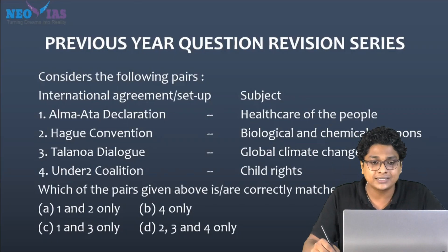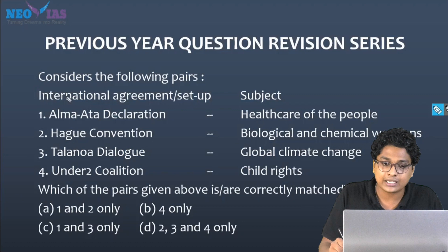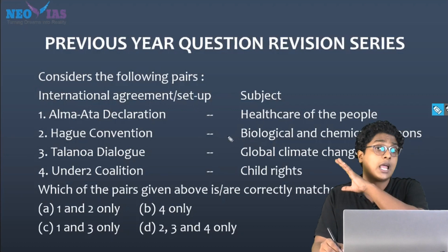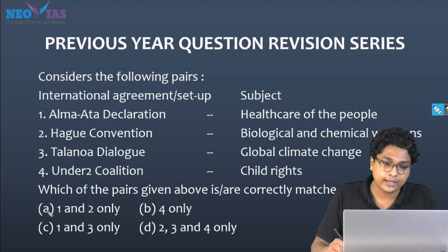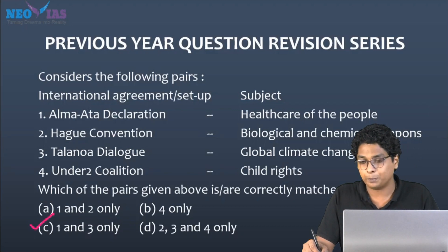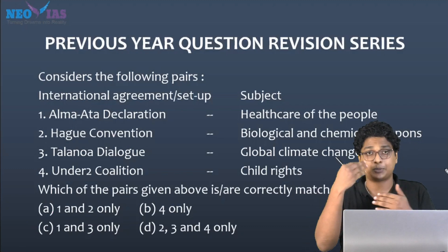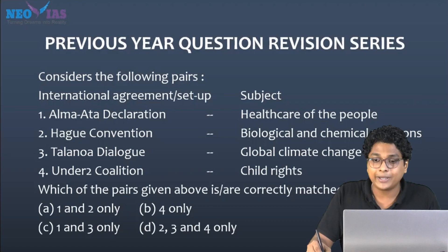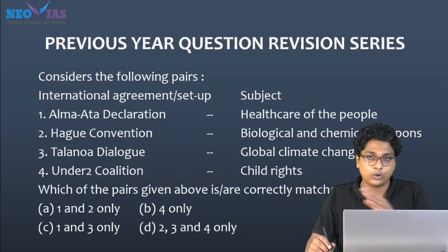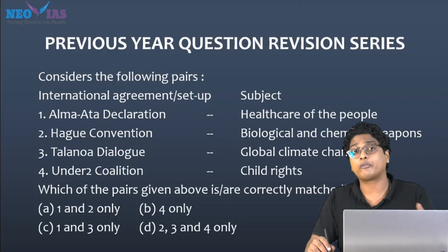The topics are done and we are moving on to the previous year question revision series. This was the question given in the last video — some international agreements and setups were given, and this was a current affairs-based question. The answer comes out as C, which is 1 and 3 only. Please make sure you go through all these kinds of international agreements and organizations holistically, especially topics like environment or climate change. Note that they are not limiting these questions to the past one year — analyzing previous questions shows they ask current affairs going back one and a half to two years.